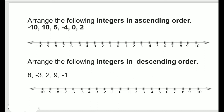The first example: we have the integers minus 10, 10, 5, minus 4, 0, and 2, and we need to arrange these in ascending order. We will use the number line and mark the points: minus 10, 10, 5, minus 4, 0, and 2. Ascending order means arranging from small to big.